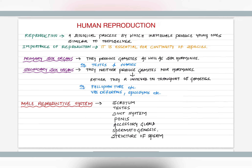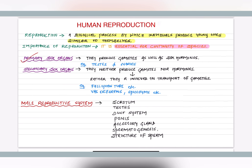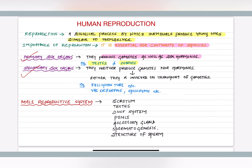Let's start with the chapter. First I would like to discuss the definition and significance of reproduction. Reproduction is a biological process by which individuals produce young ones similar to themselves. It is essential for continuity of a species — reproduction maintains the population of any particular species. We have two terms: primary sex organs, which produce gametes as well as sex hormones — for example, testis in males and ovaries in females — and secondary sex organs, which neither produce gametes nor hormones, but are involved in transport of gametes, like the fallopian tube in females and vas deferens, epididymis in males.